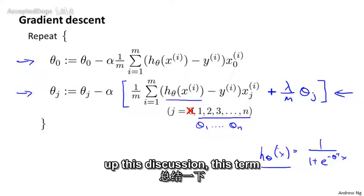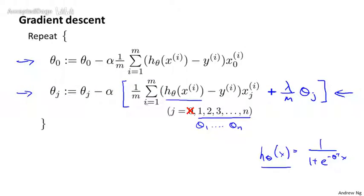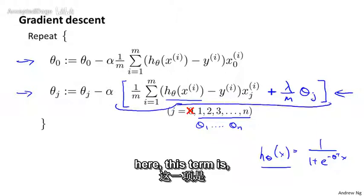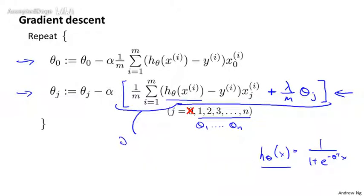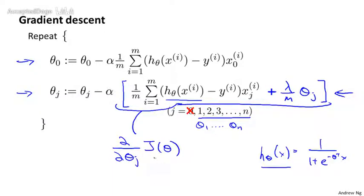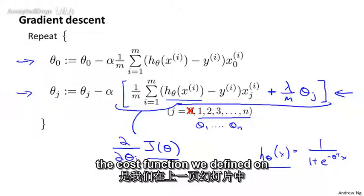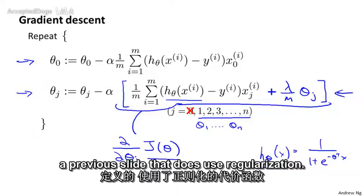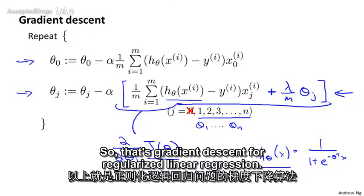And of course, just to wrap up this discussion, this term here in the square brackets is the new partial derivative with respect to θ_j of the new cost function J(θ), where J(θ) here is the cost function we defined on the previous slide that does use regularization. So that's gradient descent for regularized linear regression.